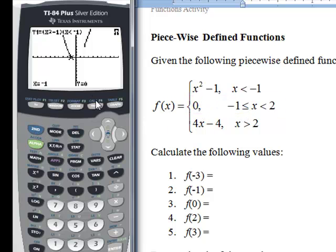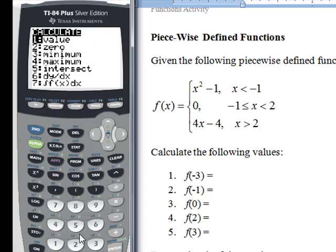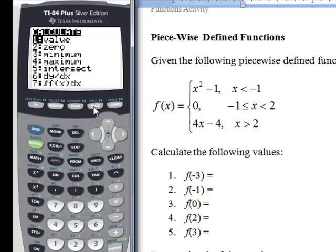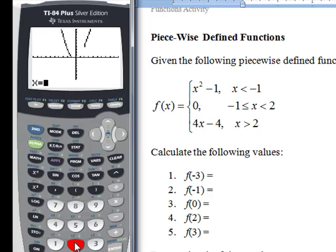We'll just finish this one off just to make sure we get all our values. Our value at 0, also 0. Second, calculate, value, at 2.